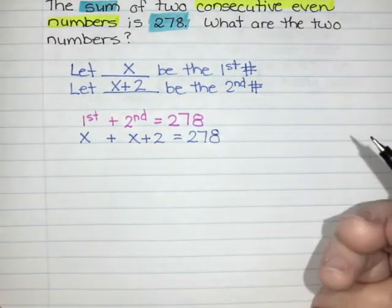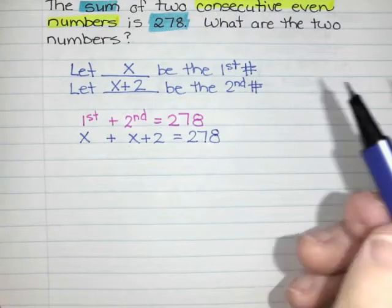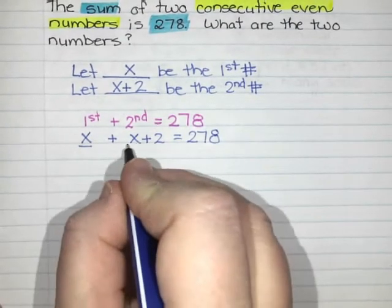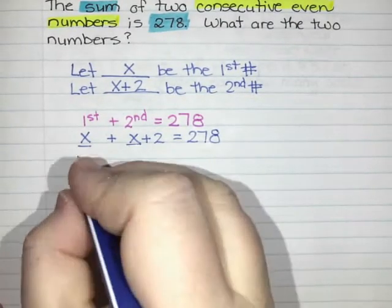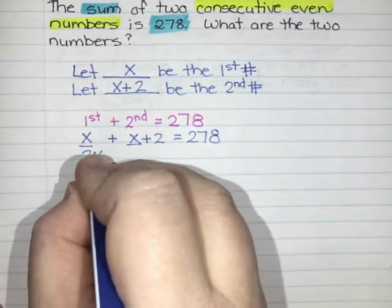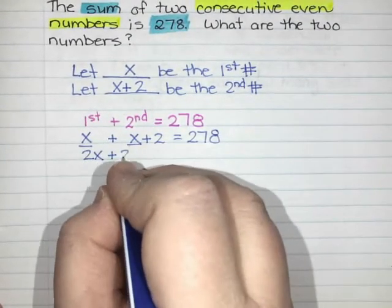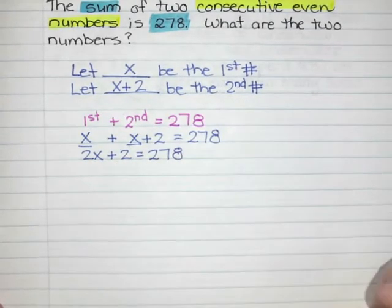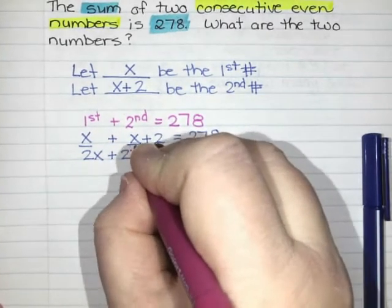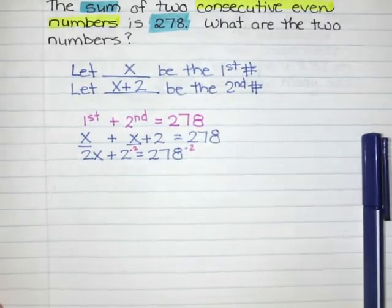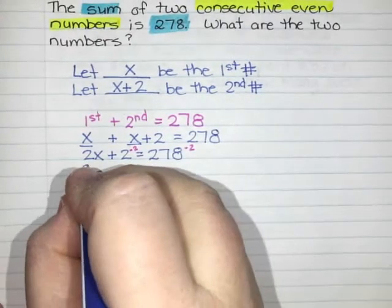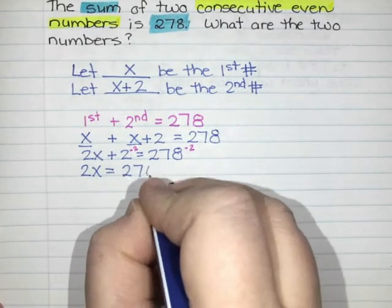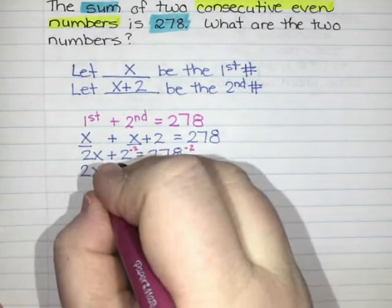Now all I have to do is solve my equation. I notice that I have like terms, so I'm going to add my like terms together. X plus x is 2x, and then plus 2 equals 278. I am going to subtract 2 from each side, so I get 2x equals 276. And then I am going to divide by 2.